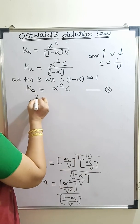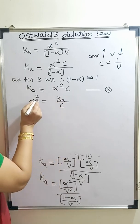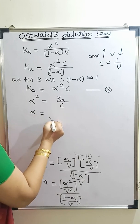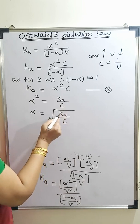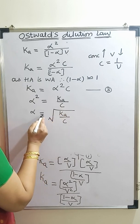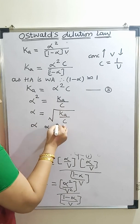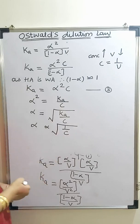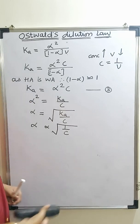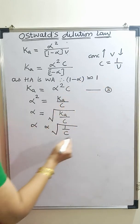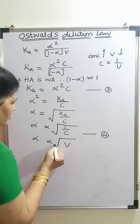Rearranging the equation: alpha² equals Ka / C. Removing the square, alpha equals √(Ka / C). Since Ka is a constant, this becomes a proportionality: alpha is proportional to 1/C. And since 1/C is proportional to V, we also have alpha proportional to √V. I will mark these as equations 4 and 5.